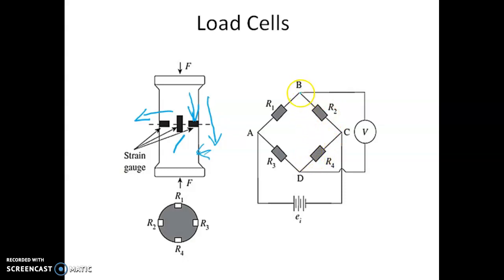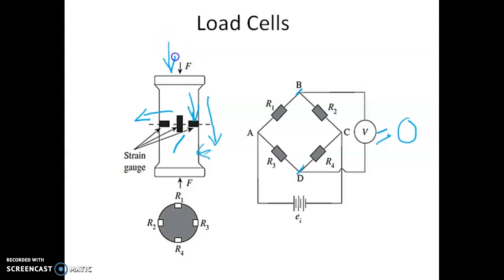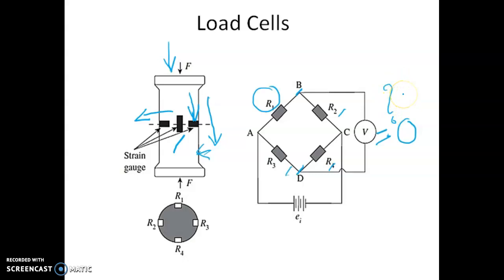The potential difference is taken between points B and D. When the elastic member is at the initial stage and not loaded, the potential difference will show a voltage equal to zero. When a compressive load is applied, the resistance values of R1, R2, R3, and R4 change, and this change is reflected as a voltage output. This output voltage is calibrated to show the corresponding force.